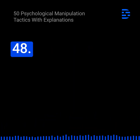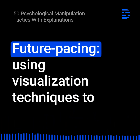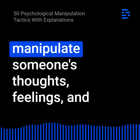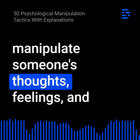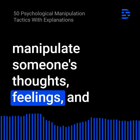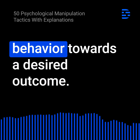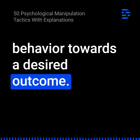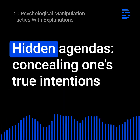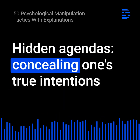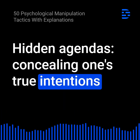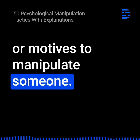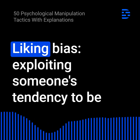48. Future pacing: Using visualization techniques to manipulate someone's thoughts, feelings, and behavior towards a desired outcome. 49. Hidden agendas: Concealing one's true intentions or motives to manipulate someone. 50. Liking bias: Exploiting someone's tendency to be more open to persuasion from people they like or admire.